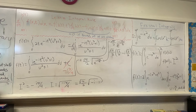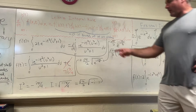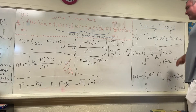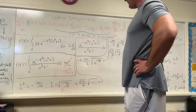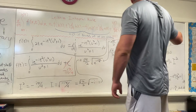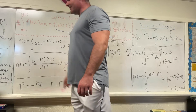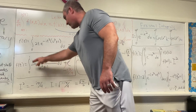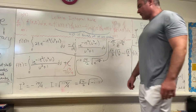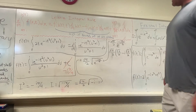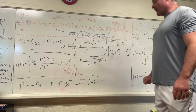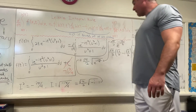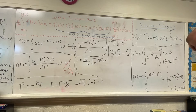Now we have a final expression for f(t). To find I², we plug in t = ∞. As t → ∞, e^(-it²(u²+1)) → e^(-∞) = 0, so the entire integral vanishes, leaving I² = -iπ/4. Taking the square root of both sides, I = √(-iπ/4) = √(π/2) · √(-i).